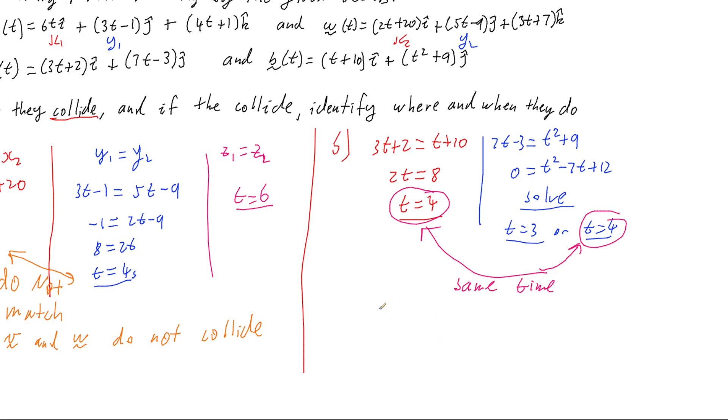So that means that the particles collide at t equals 4, because they had the same x and y coordinates at the same time. I found when did they have the same x, I found when they had the same y, and they both had those at the same time of t equals 4.